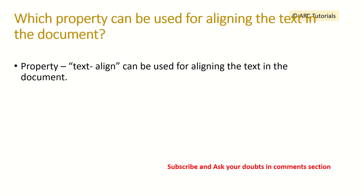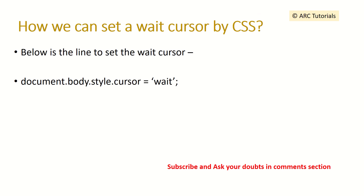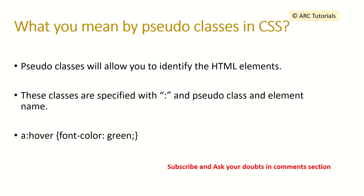Which property can be used for aligning text in the document? We use the property text-align with values like left, right, and center. How can we set a wait cursor using CSS? We set the cursor style by accessing the cursor property, with values such as wait, crosshair, and pointer.